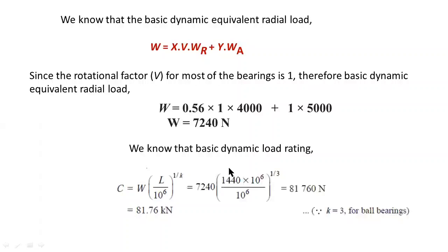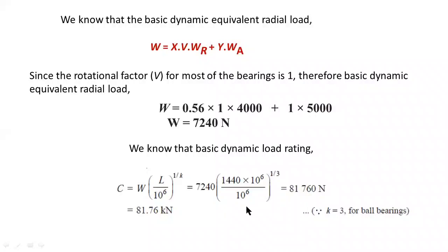Using the basic dynamic load rating formula: C = W × (L90 / 10⁶)^(1/k), with W = 7240 N, L90 = 1440 × 10⁶ revolutions, and k = 3 for ball bearings, the final answer is C equals 81.76 kilonewtons.